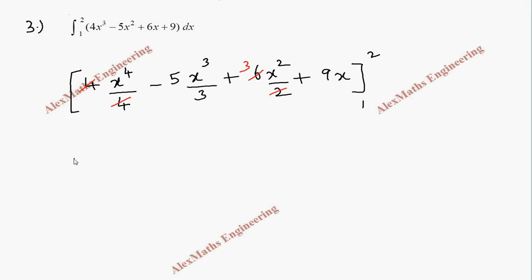So 2⁴ is 16, minus 5/3 into 2³ which is 8, plus 3 into x² is 4 when I substitute x as 2, then 9 times 2 is 18.